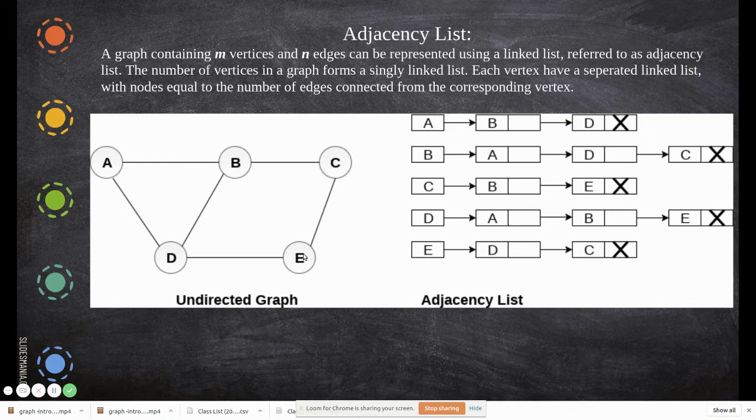C has connection with E and B, so B and E. D has connection with A and B and E. Last is the null pointer. E is with D and C.